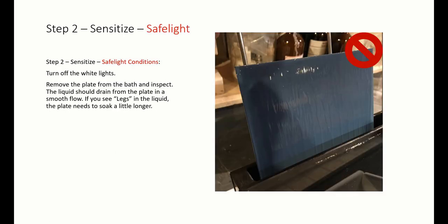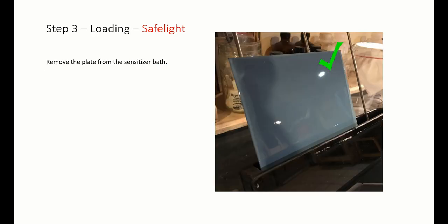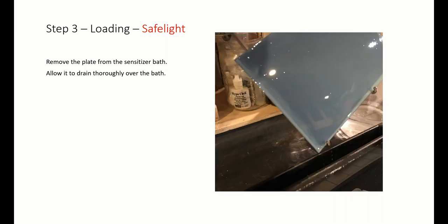Remove the plate from the bath and inspect. The liquid should drain smoothly from the plate. If you see legs in the liquid, the plate needs to soak a little longer. If the plate flows smoothly, remove it from the sensitizer and allow it to drain thoroughly over the bath.